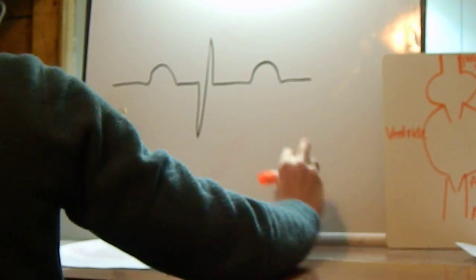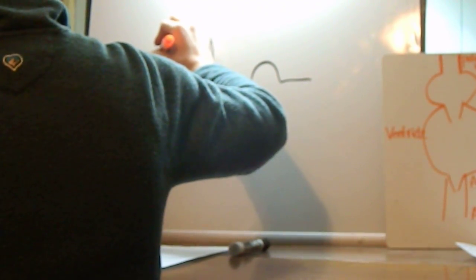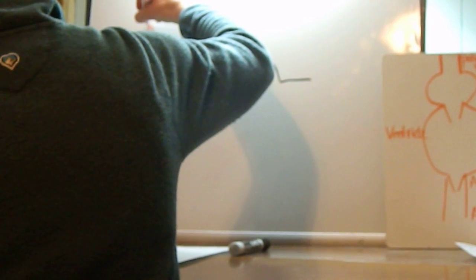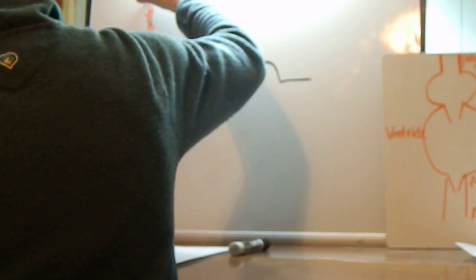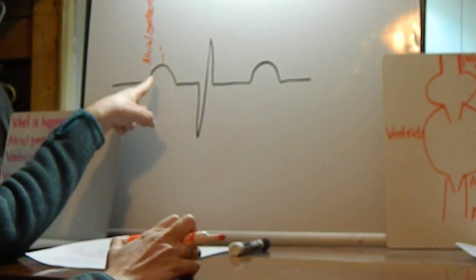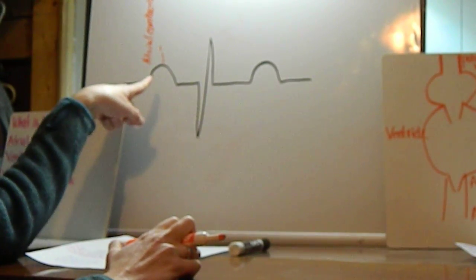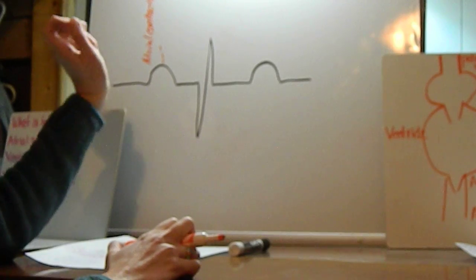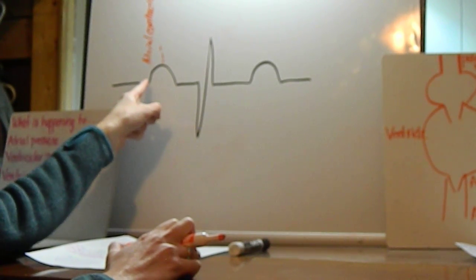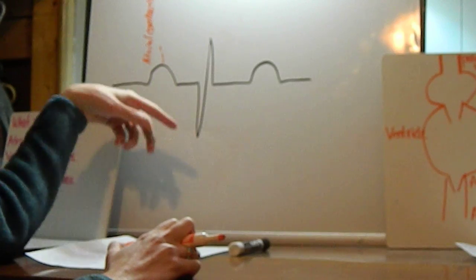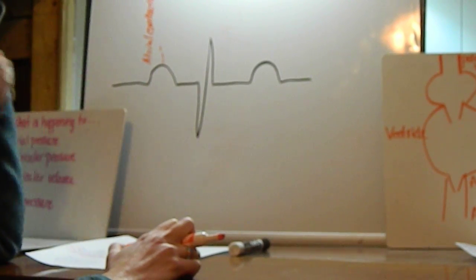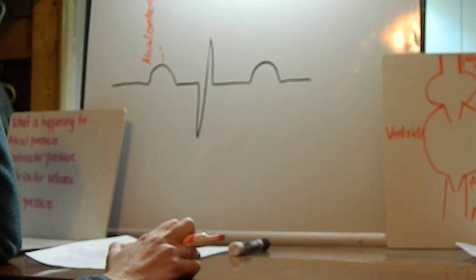The first one: atrial contraction occurs right above the P wave. So we're going to write 'atrial contraction.' Remember, atrial contraction comes on top of the P wave because the electrical events in the heart always precede the mechanical events. The reason there's a difference is the time it takes for excitation-contraction coupling to occur — that's why the difference between the electrical and mechanical events is there.